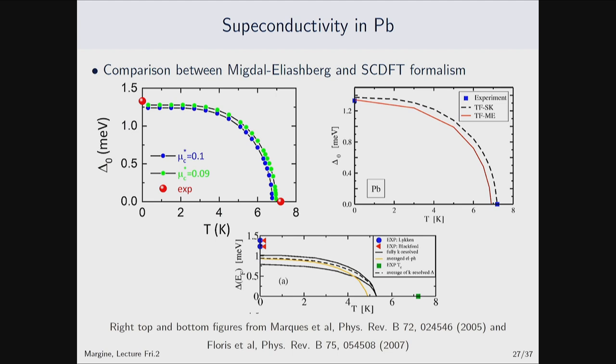In the SCFDFT study, they even did an isotropic calculation. The two black curves are fully k-resolved, showing there is some anisotropy in the superconducting gap. In principle, if you had solved the anisotropic equations instead of the isotropic ones, you would have seen some smearing — it would not be just a simple curve, but a gap distribution. You will see in the next example what that would look like.